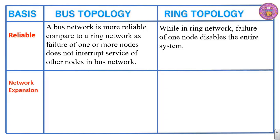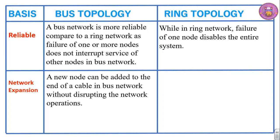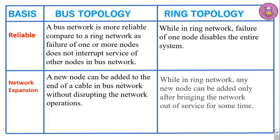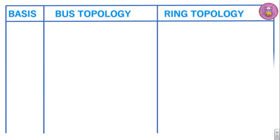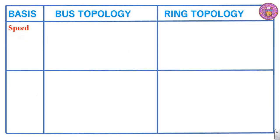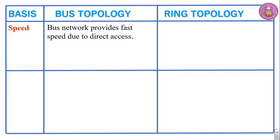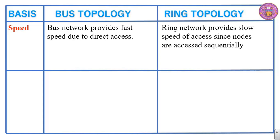On the basis of network expansion, in bus topology a new node can be added to the end of the cable without disrupting network operations. In ring network, any new node can be added only after taking the network out of service for some time. On the basis of speed, a bus network provides fast speed due to direct access, while a ring network provides slow speed since nodes are accessed sequentially, one after another.